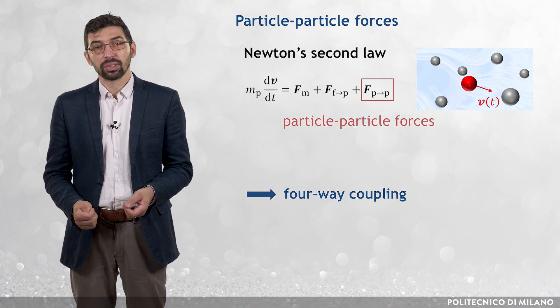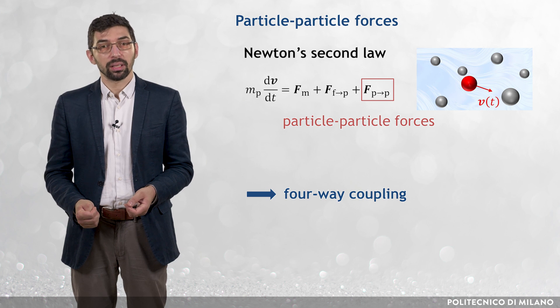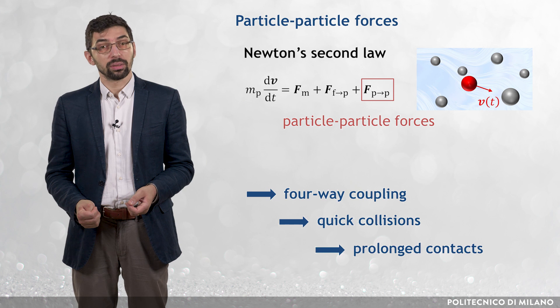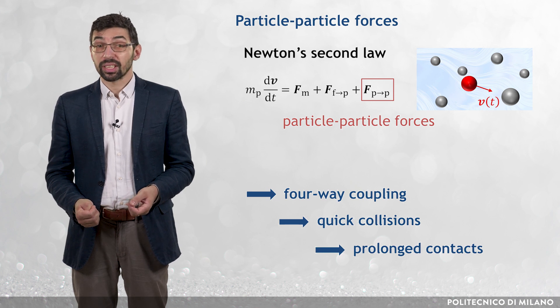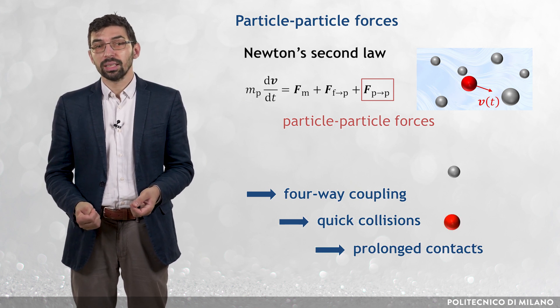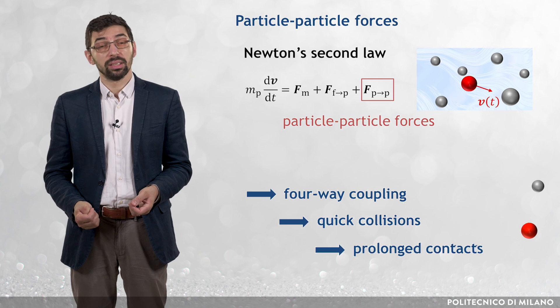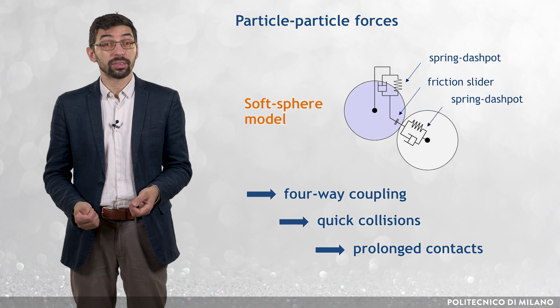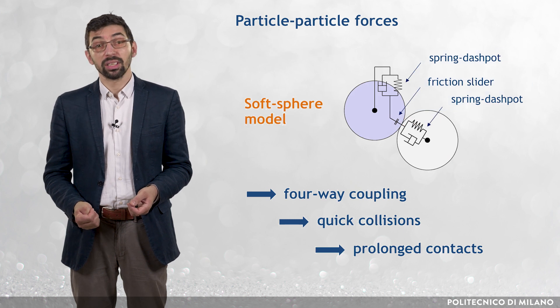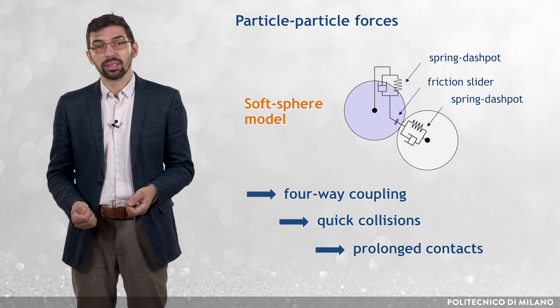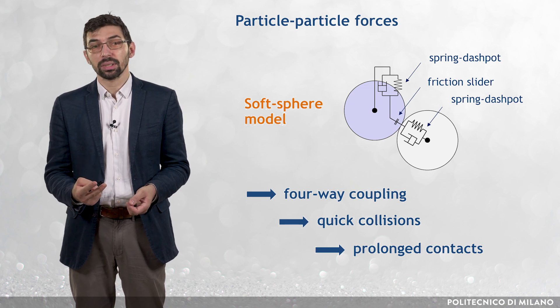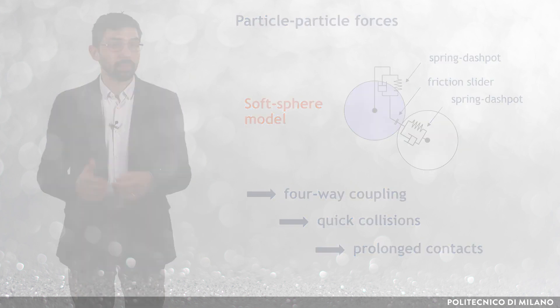The particle-particle interactions might occur either in the form of quick collisions or in the form of prolonged contacts. In the first case, they can be described by a number of models available in the literature. One of the most widely used is called soft sphere model, according to which the collision is represented by a combination of two spring dashpot systems and a friction slider.